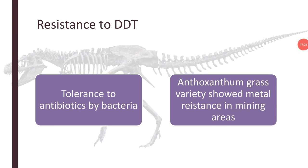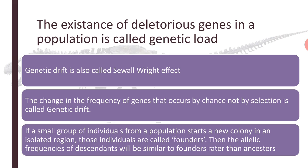Anthoxanthum grass showed metal resistance in mining areas, demonstrating resistance to metal toxins. The existence of deleterious genes in a population is called genetic load — that is, harmful gene frequency. Genetic drift, also called the Sewell Wright effect, is the change in gene frequency that occurs by chance rather than by selection. If a small group of individuals starts a new colony in an isolated region, those individuals are called founders, and the allelic frequencies of descendants will be similar to the founders rather than the ancestors. The best example is Red Indians, where the entire population consists of blood group O individuals.